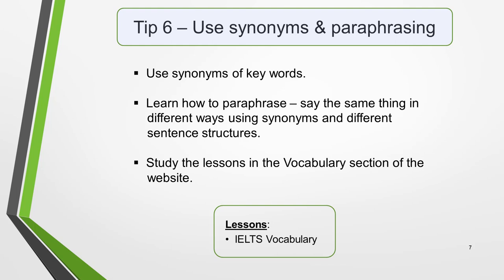Tip 6: Use synonyms and paraphrasing. You will need to use the key words from the question in your answer. Where possible, use synonyms rather than just repeating the same words. This is essential for achieving a high score for Lexical Resource, which is vocabulary, and which counts for another 25% of the total marks. The examiner will not be impressed if you just use the same words over and over again. You'll also need to know how to paraphrase — that is, say the same thing in different ways, using different sentence structures and synonyms. This isn't just an IELTS writing tip, but also applies to reading, speaking and the listening sections of the exam as well. Check out the vocabulary section of the website for help.